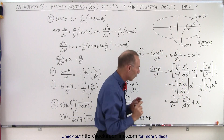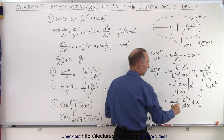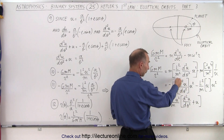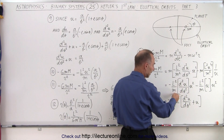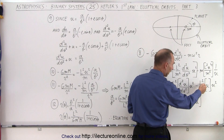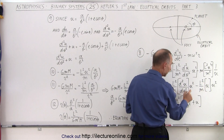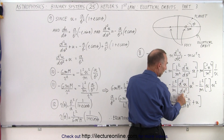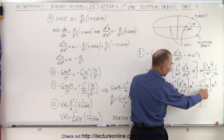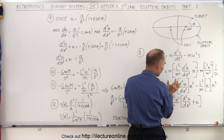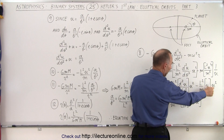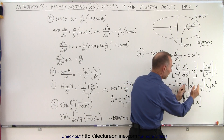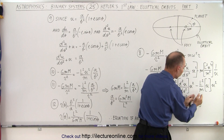Now we wrote it in a very specific way. Notice we wrote this as u times u squared instead of just u cubed. Why did we do that? Because notice that the first term, minus l squared over m times u squared, is the same as l squared over m times u squared, and the first term is multiplied by the second derivative of u with respect to theta, while the second term is multiplied by u. So if we factor out minus l squared over m times u squared, we end up with this times the second derivative of u with respect to theta, plus u.